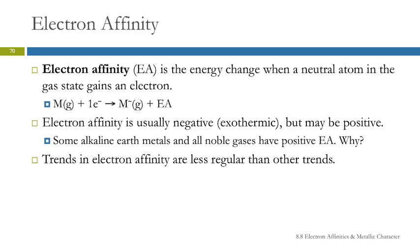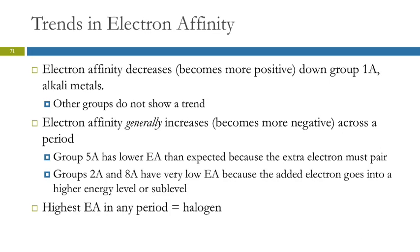So the electron affinity trends are much less regular than the other trends. In fact, it can almost barely be called a trend. We do see that for group 1A, there's a nice trend going down the group. So as we go down, electron affinity decreases. So that means it becomes more positive as you go down. Other groups don't show a trend like this.